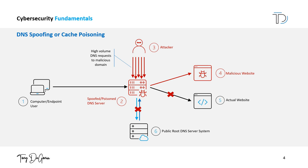The attack works by taking advantage of vulnerabilities in the DNS protocol or the implementation of DNS servers. An attacker can send a large number of DNS queries to a server with forged IP addresses, tricking the server into believing that the attacker's IP address is the correct one for a given domain name. As a result, the server will store this forged information in its cache, allowing the attacker to redirect traffic from legitimate websites to malicious ones.